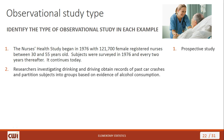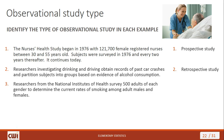Next example: researchers investigating drinking and driving obtained records of past car crashes and partitioned subjects into groups based on evidence of alcohol consumption. This is a retrospective study — you're looking to the past, to records of what happened, to collect your data. Therefore, that makes this a retrospective study.